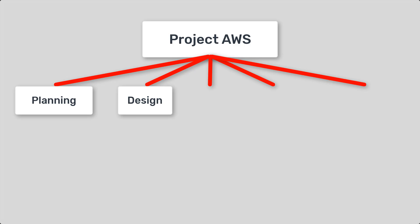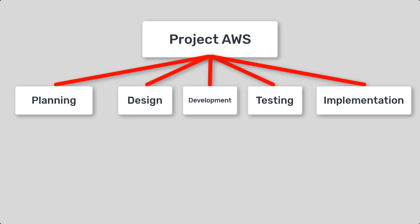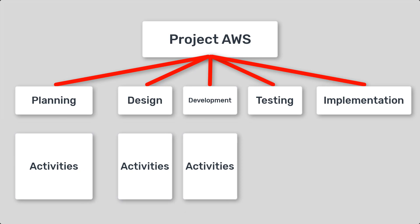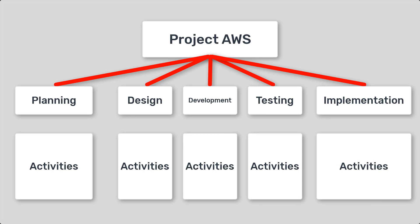Number three, we have to further decompose the phases into tasks. Within each phase, tasks are broken down into more specific activities. These tasks are typically smaller in scope and can be assigned to individuals or teams. They represent the specific actions required to complete the project successfully.